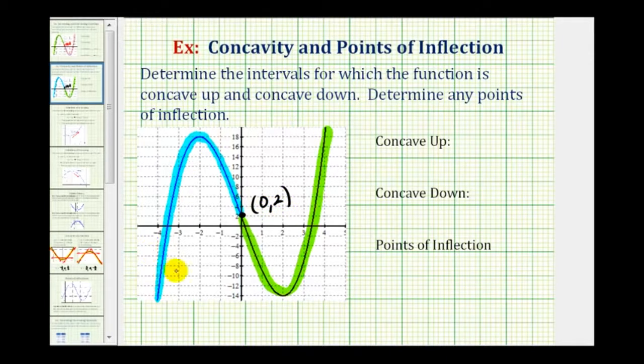So the left piece, the blue piece, is concave down, and the green piece, the right piece, is concave up. So the function is concave down from negative infinity to zero. Or if we want, we could say when x is less than zero.